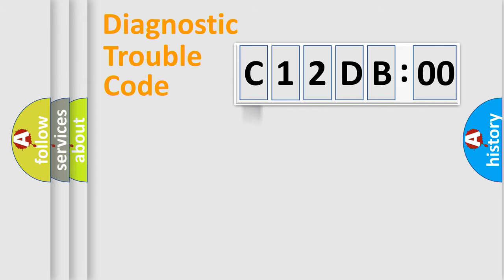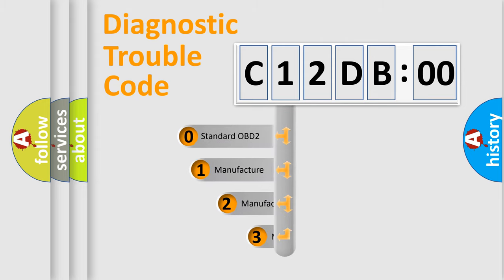Powertrain, Body, Chassis, Network. This distribution is defined in the first character of the code.